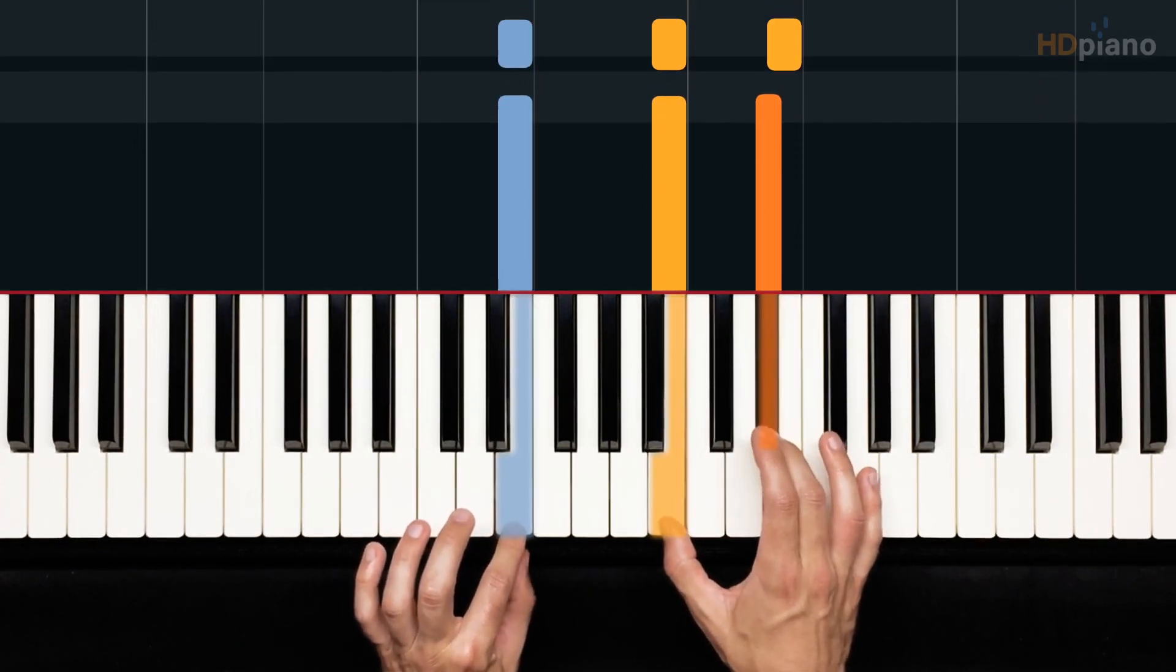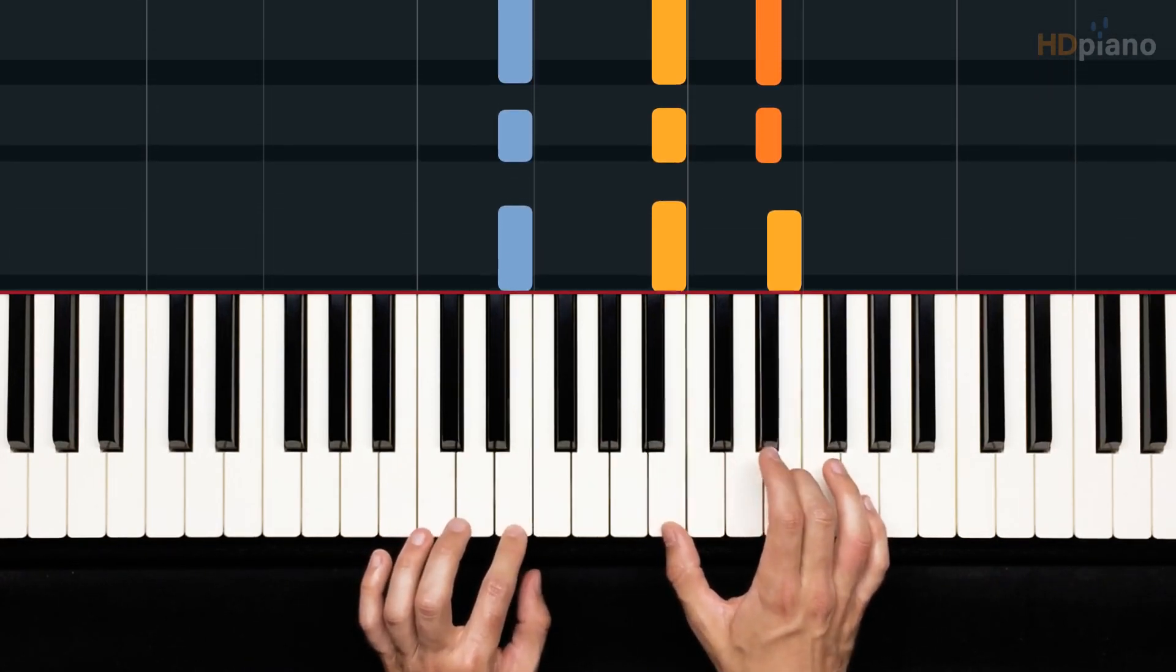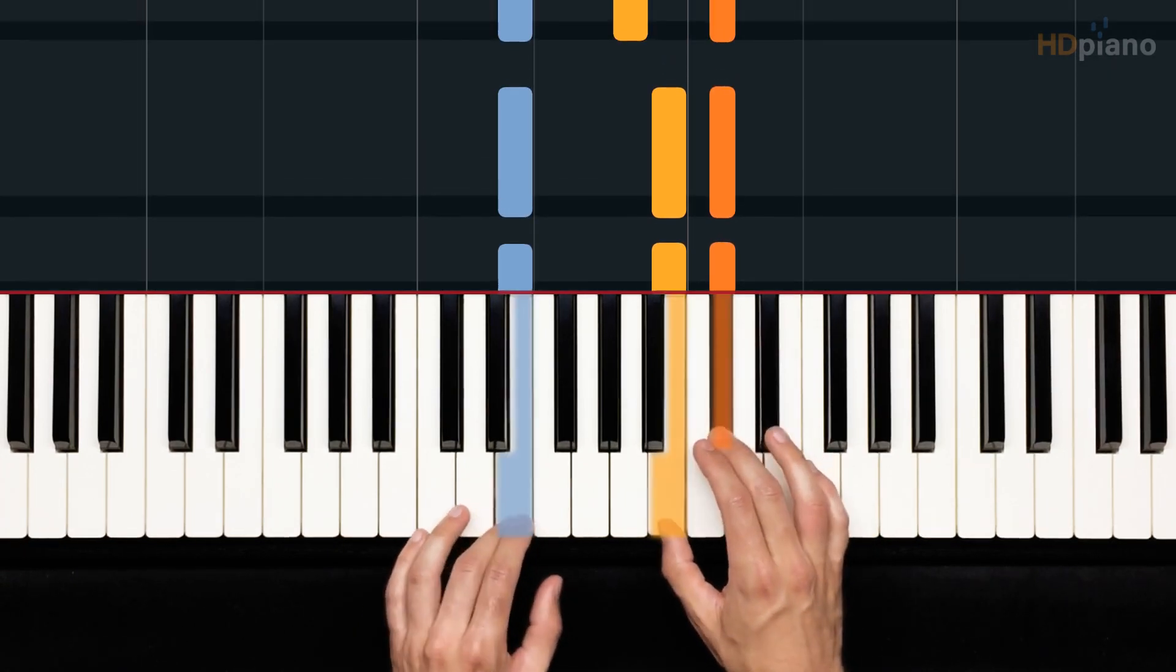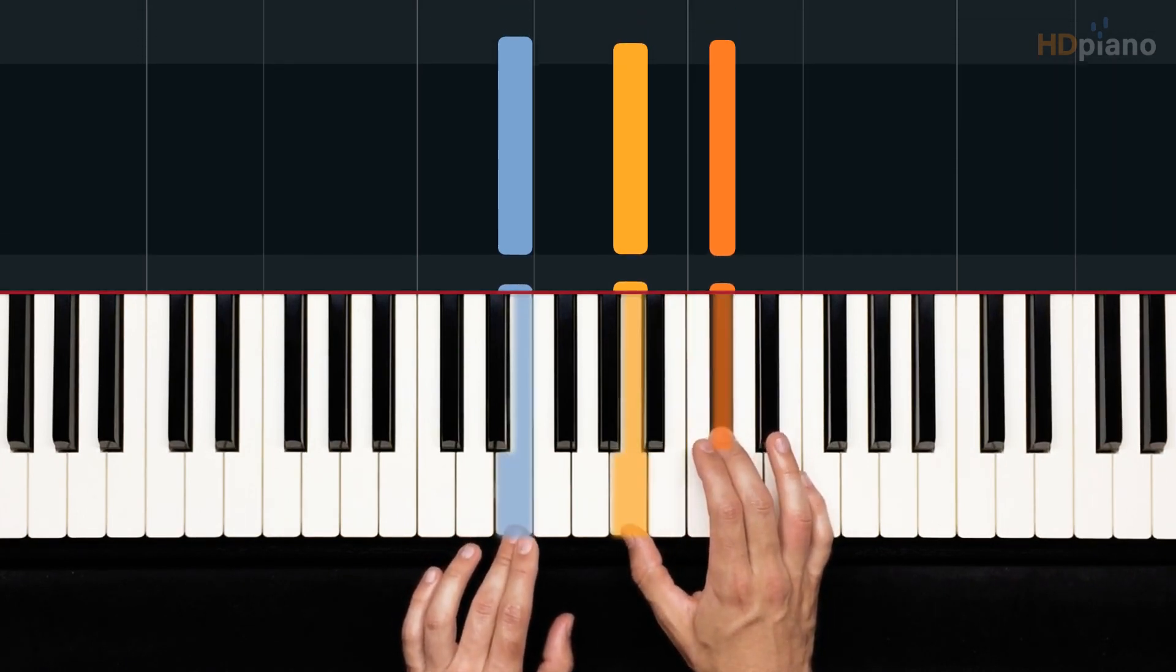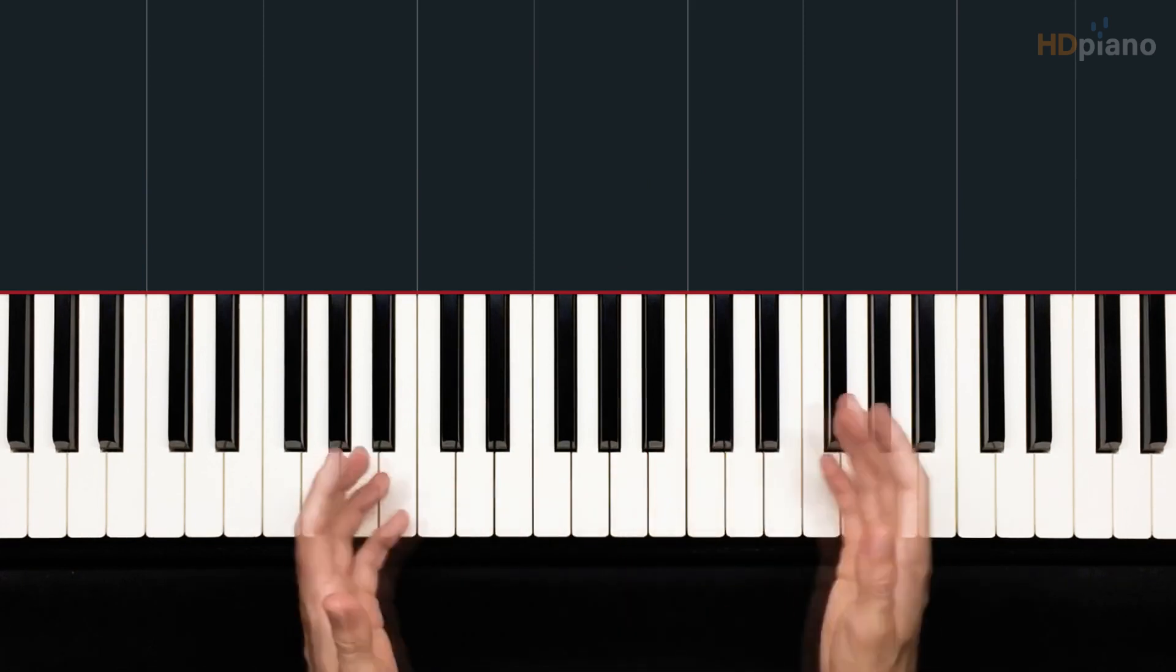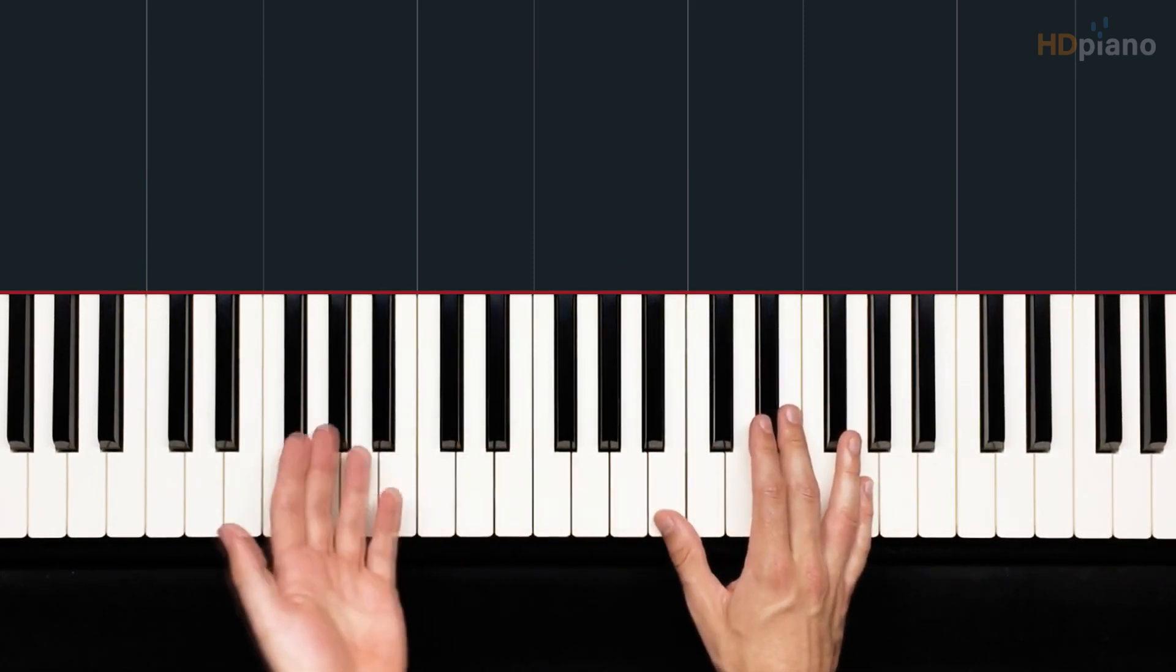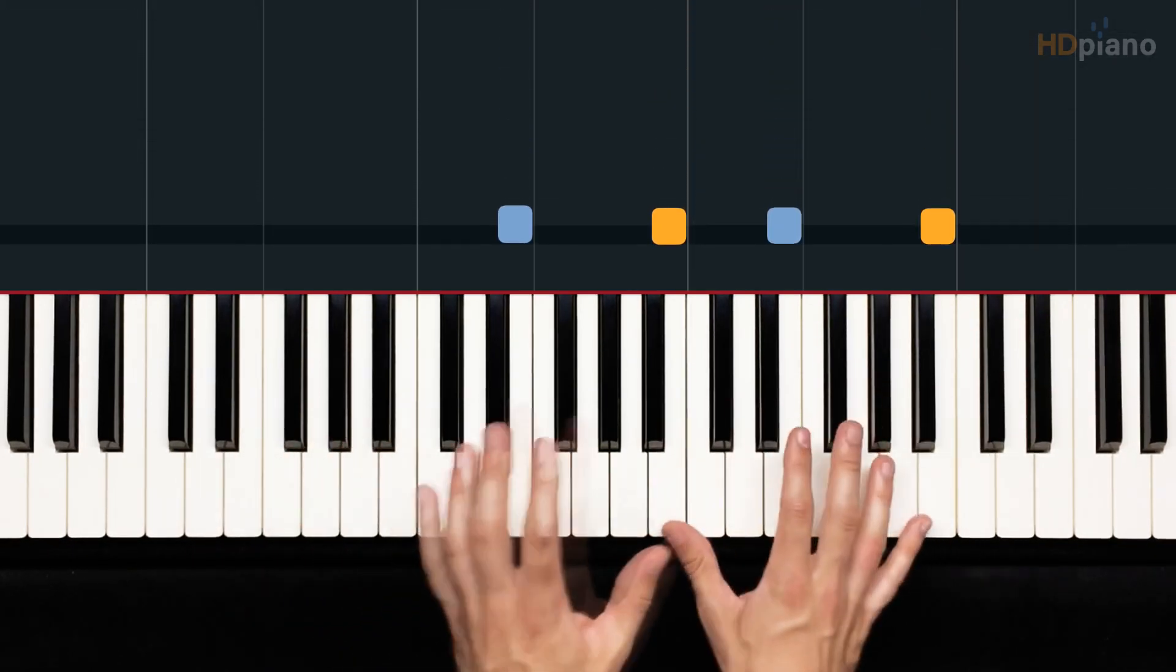And then we have E major 7. That's that D sharp. So that top note moves down to D sharp. And then we go to C sharp. And then we take that B to A. So that's the core harmonic skeleton. So you could get away with just playing that for the whole intro and verse, outro, all the verses and stuff.